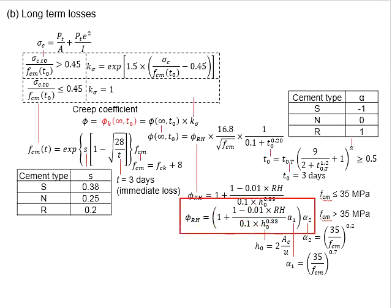The equation here has this RH, which represents the relative humidity. And you have H0 here, where the H0 is defined by two times area of the cross-section divided by its perimeter area. There are two factors here, alpha 1 and alpha 2. They are in the functions of FCM, which uses 35 FCM as a guide and present in terms of the ratio of FCM in the power of 0.2 and 0.7.